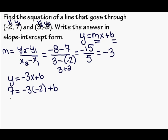Okay, so we have the equation written out. So 7 = -3 times -2 is 6 + b. I want to figure out my y-intercept. I need to get b by itself. So I'm going to subtract 6 from both sides of the equation. So 1 = b. So here's my y-intercept.